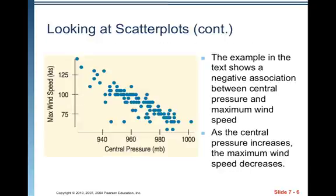The example in the text shows a negative association between central pressure and maximum wind speed. As the central pressure increases, the maximum wind speed decreases.